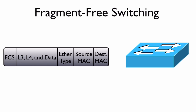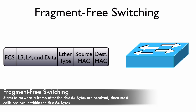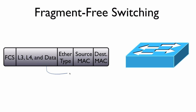Fragment-free switching is somewhat of a compromise. It states that most collisions occurring within a frame are going to occur within the first 64 bytes. What fragment-free switching does is look beyond just the destination MAC address, beyond the source MAC, and beyond the EtherType — it will actually look 64 bytes into the frame.